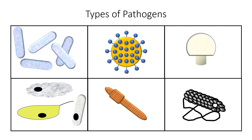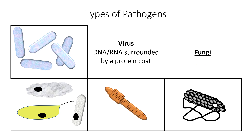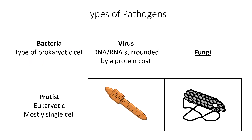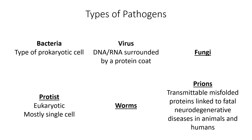At A-level, there are six main pathogens you need to be aware of. Some you may be familiar with from GCSE. The top centre picture is a virus and the top right is a fungi. On the left-hand side, two similar pictures are shown: one has a nucleus and one does not. The bottom left with the nucleus is what we call a protist — you'll hopefully be familiar with malaria from GCSE. The top left shows bacteria. The remaining two are worms and prions. Prions are protein structures which result in neurodegenerative diseases in living organisms.